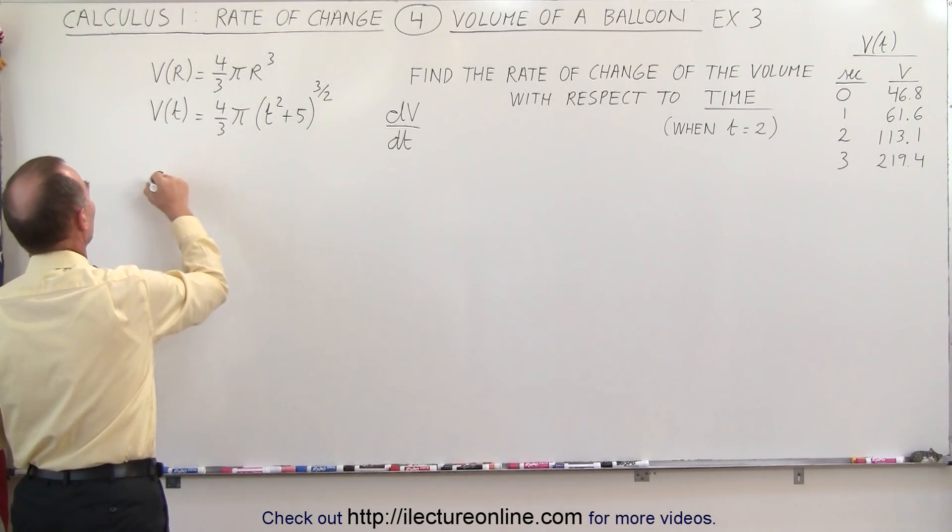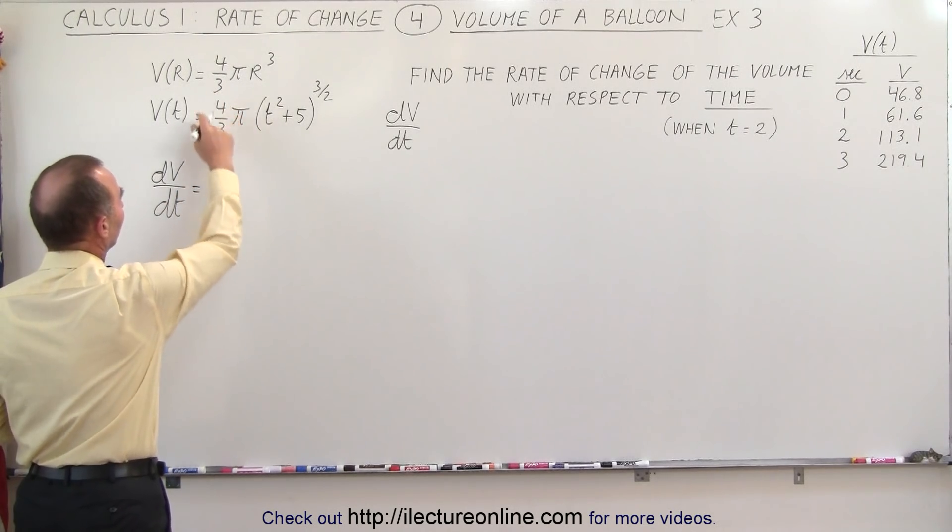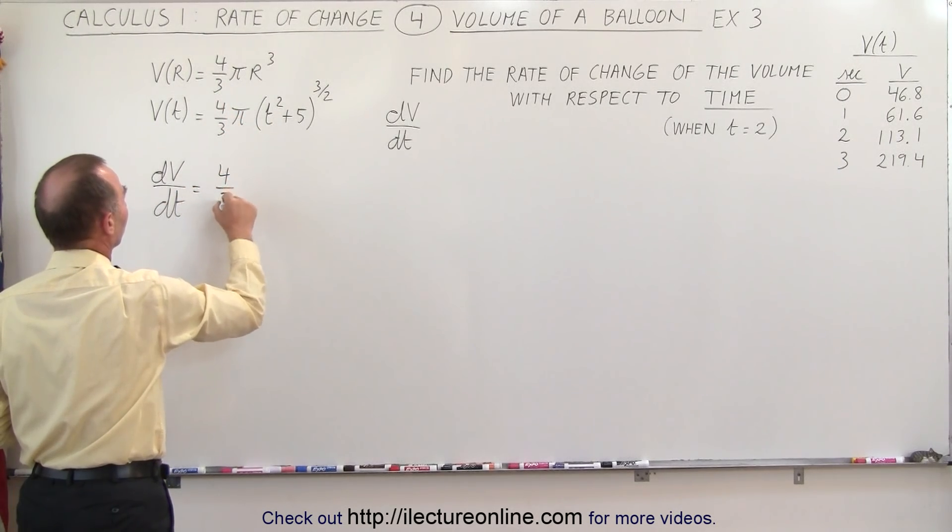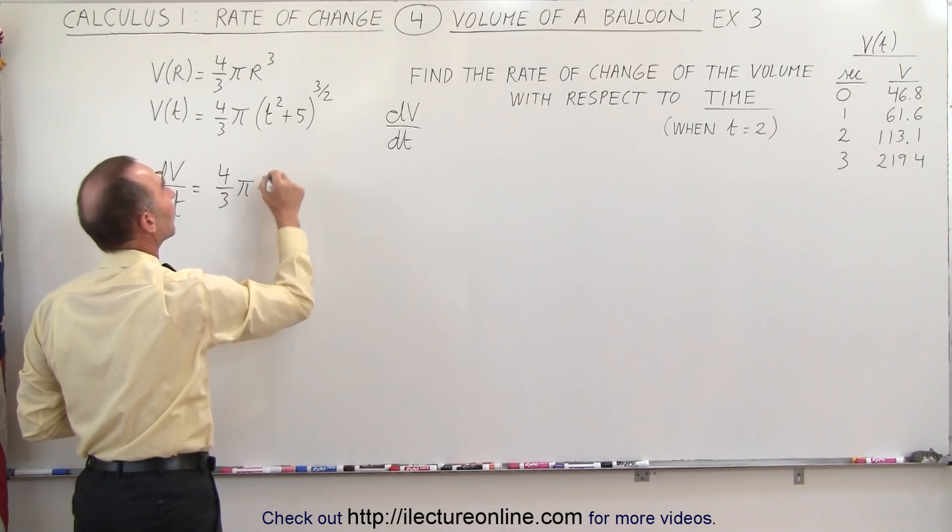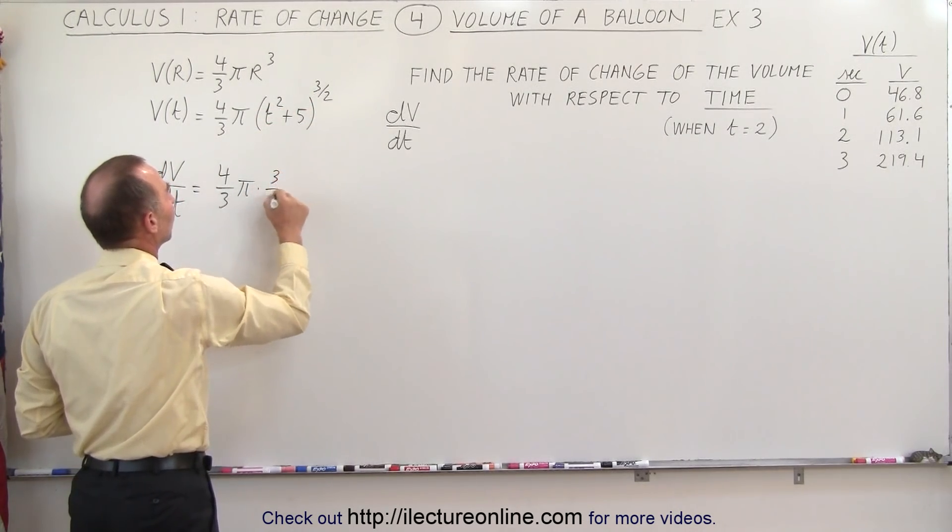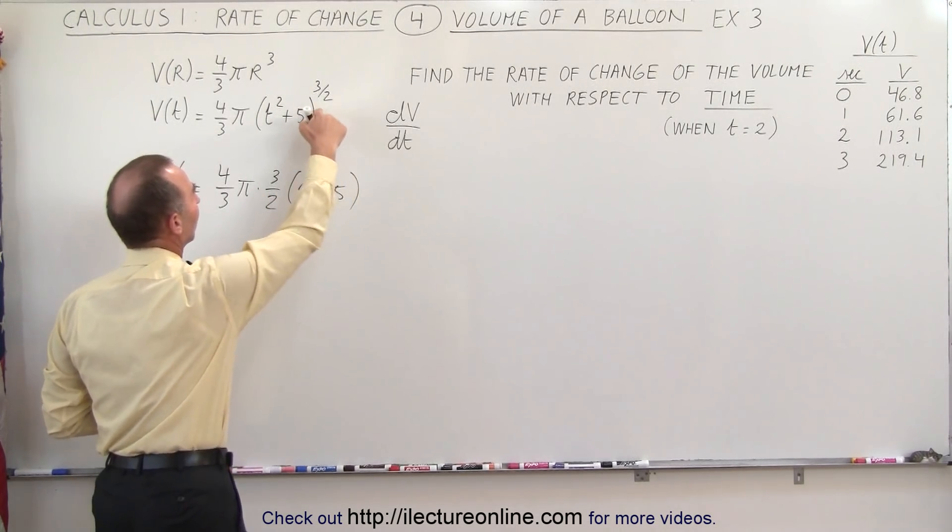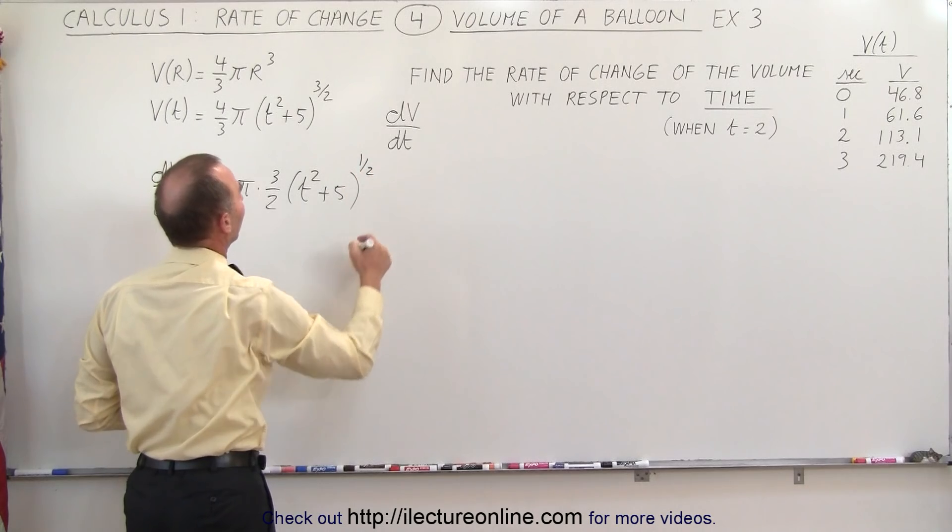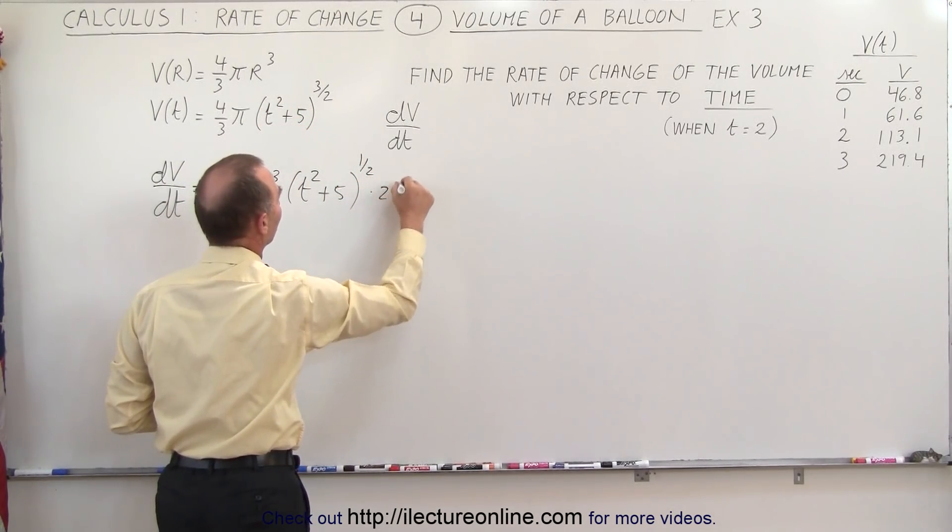So we can write that dv/dt is equal to—well we have a constant here which is 4 thirds pi—times the derivative of this. So we take the exponent down, this is 3 over 2 times t squared plus 5, subtract 1 from the exponent to the 1 half power, and then we take the derivative of what's inside, which would be times 2t.